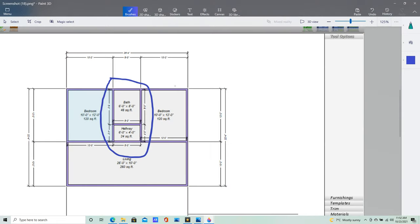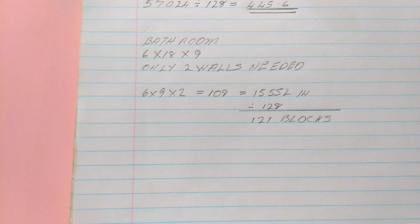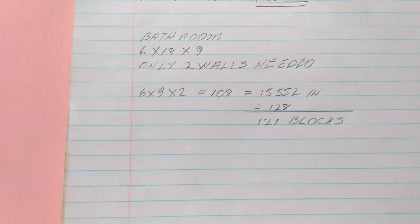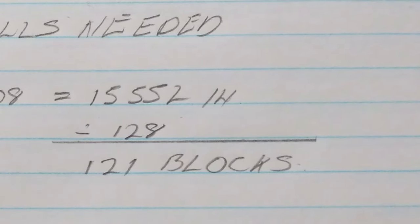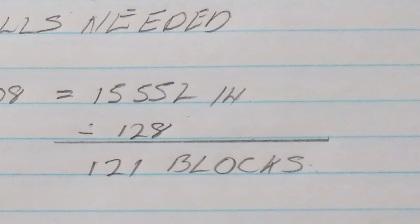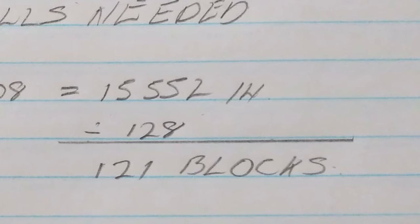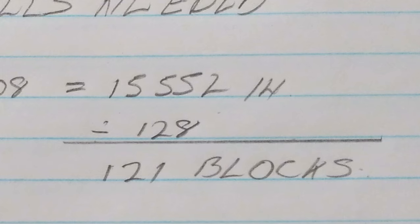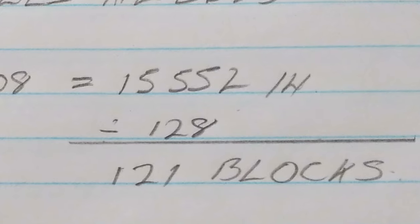For the bathroom, since it sits between the two bedrooms, you will not need to calculate the walls adjoining the bedrooms — only the two front and back walls. Each wall is 6 feet wide, so it's 6 by 9 by 2, giving 108 square feet. Converting that gives 15,552 square inches. Each block is 128 square inches, so dividing 15,552 by 128 gives you 121 blocks for your bathroom.